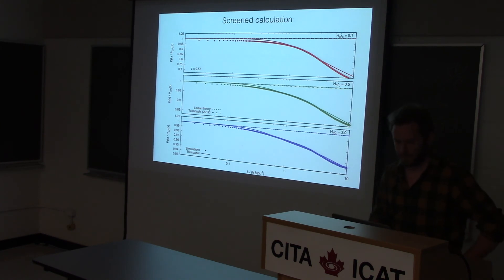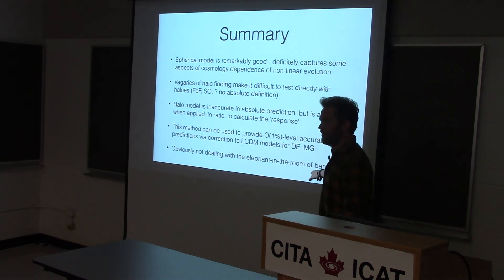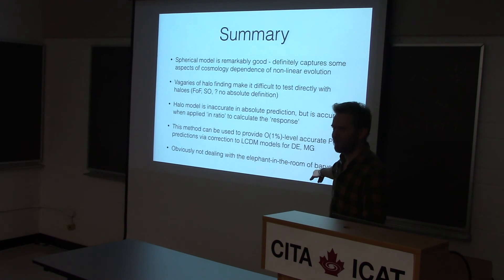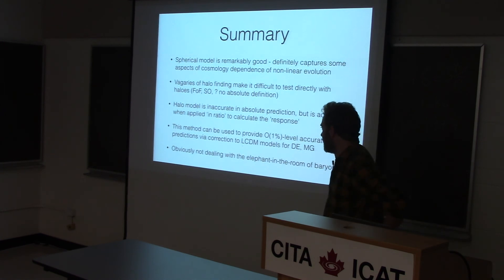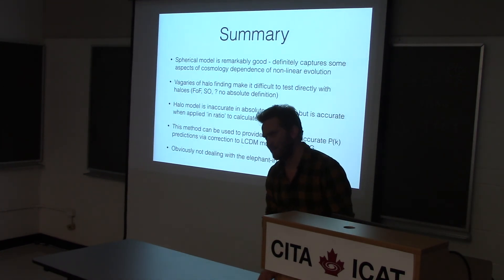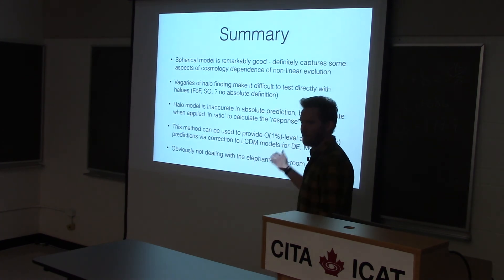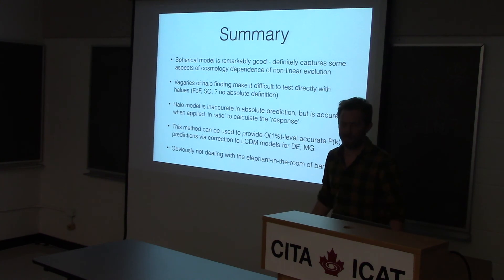That's all I have. The one thing I should honestly point out is that baryonic physics is the one big elephant in the room for weak gravitational lensing on these small scales — I haven't talked about that at all. But any successful approach to modelling the nonlinear spectrum should start from spectra in the absence of baryons that are accurate. I'd suggest this as a method to get 1% accuracy in the matter power spectrum so that you can then build baryon models on top of that. Thanks for listening.